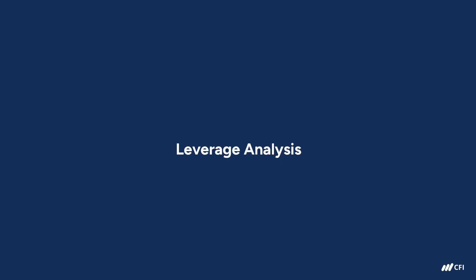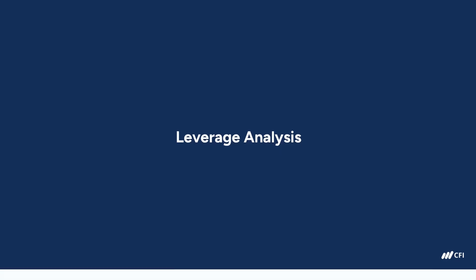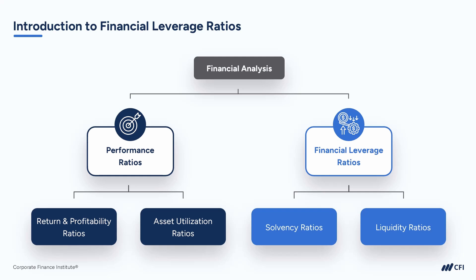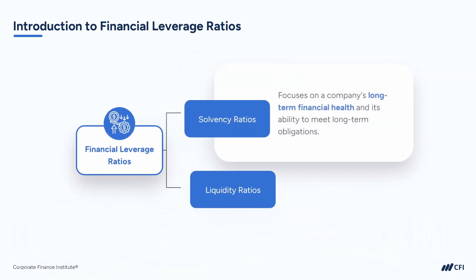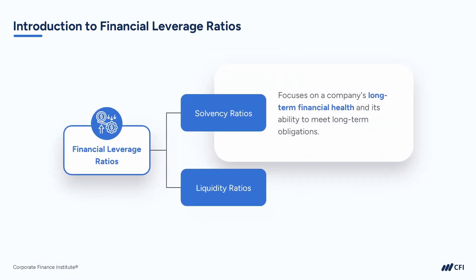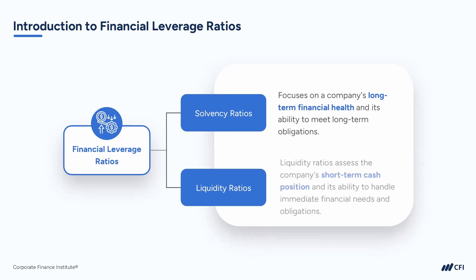We're now going to turn and look at two types of financial leverage ratios. Financial leverage ratios, in contrast, look at both solvency and liquidity. Solvency ratios focus on a company's long-term financial health and its ability to meet long-term obligations, while liquidity ratios assess the company's short-term cash position and its ability to handle immediate financial needs and obligations. Both solvency and liquidity are really important considerations when evaluating a company's financial well-being.